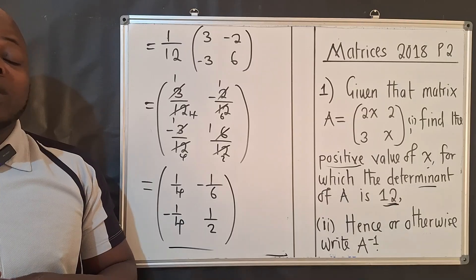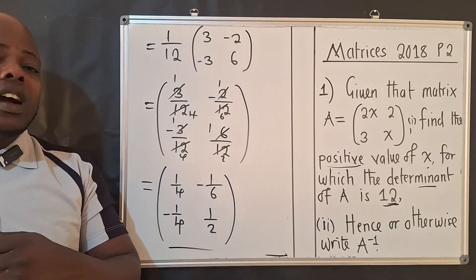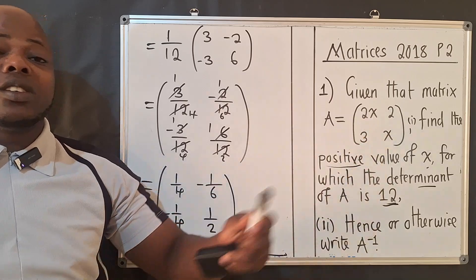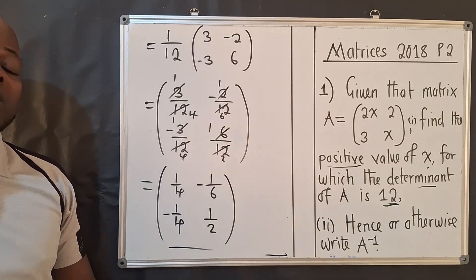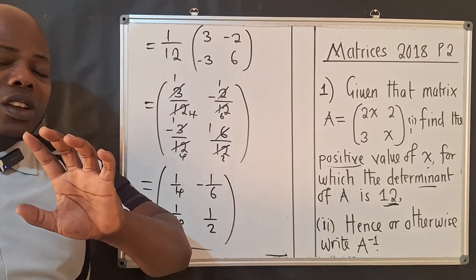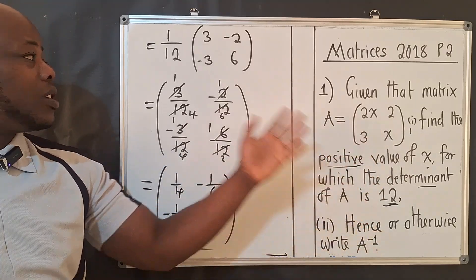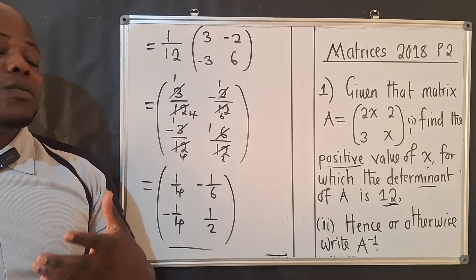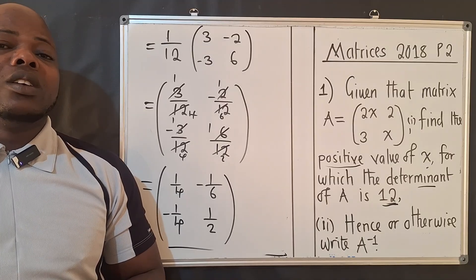This is how you're expected to answer an exam question like this. In Paper 2, matrices questions are common — they give you a determinant and ask you to find a missing value, then find the inverse. One important mistake to avoid: when finding the inverse, use the determinant value of 12, not the value of x which is 3. Always write the determinant where it belongs. Thank you so much — this is C-Chamber Jacob. Bye-bye!